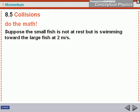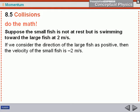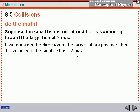Now let's say that the small fish is not at rest, but it's actually moving towards the large fish at two meters per second — it's actually moving faster than the large fish. Because they're going in opposite directions, we've got to give one of the velocities a negative value. We're going to say the small fish is moving at negative two meters per second, meaning it's moving in the opposite direction as the large fish.